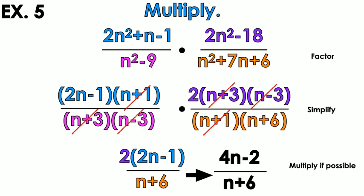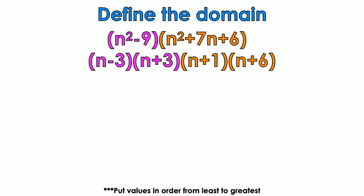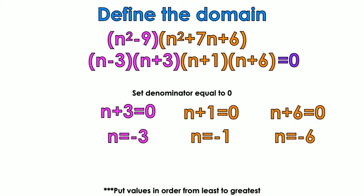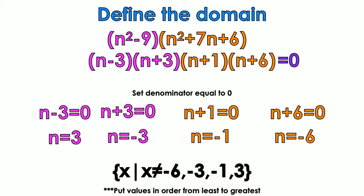The last thing is to define the domain for example 5. Using the factored versions of the denominators — pink and orange parts — I set n minus 3, n plus 3, n plus 1, and n plus 6 all equal to 0. That gives n equals 3, n equals negative 3, n equals negative 1, and n equals negative 6 as the values where the domain is undefined. And that's it in a nutshell!